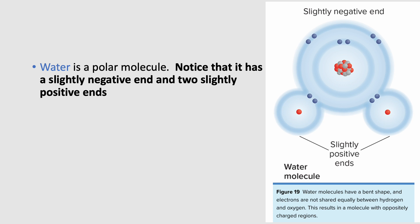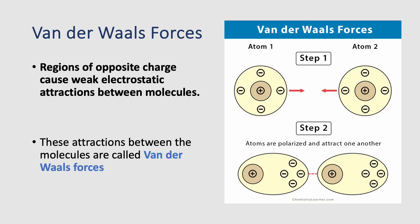Water is a polar molecule with a slightly negative end on the oxygen and two slightly positive ends on the hydrogens. Because the electrons are more pulled toward the oxygen, the hydrogens become slightly positive, and the oxygen becomes a partial negative charge. Because of these regions of opposite charge, this causes a weak electrostatic attraction between the molecules.